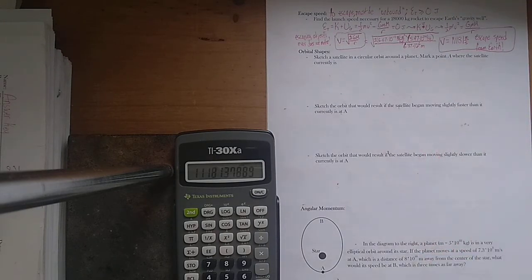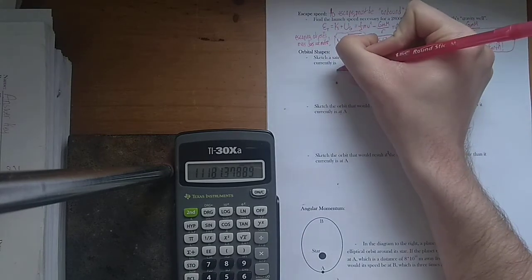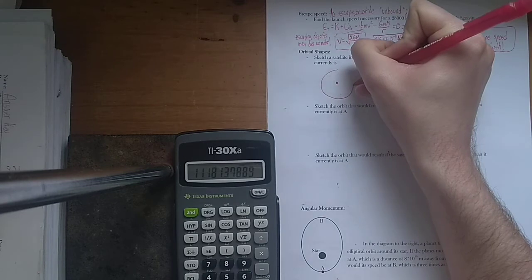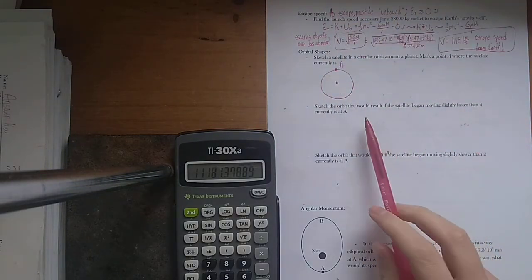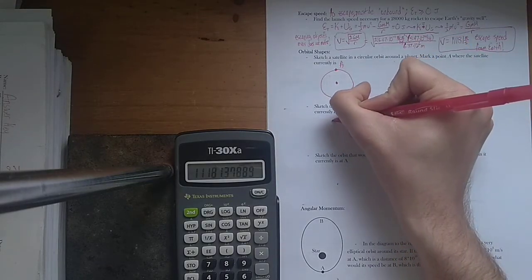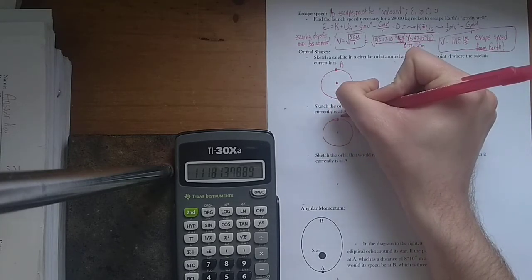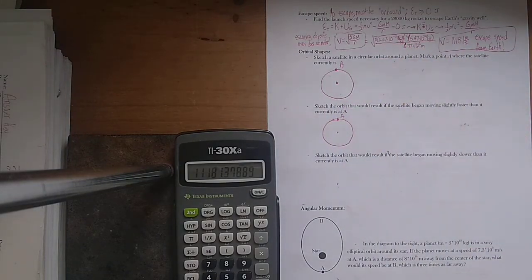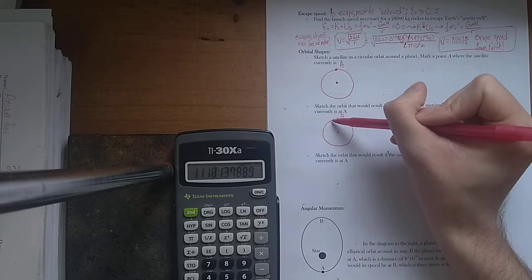Okay. Let's talk a little bit about orbital shapes, and then we'll end with angular momentum. Hopefully we can get to it soon. Sketch a satellite in a circular orbit around a planet. Mark a point A where the satellite currently is. So let's say that our planet is here, and here is our circular orbit. Let's see how good of a circle this is. Oh, that wasn't too bad. Let's say that the satellite is right here. What would happen if the satellite began moving slightly faster than it currently is at point A? So here's the current orbit. Okay. Here's point A. And remember, with circular motion, the reason that something's in circular motion is there's two kind of competing influences.